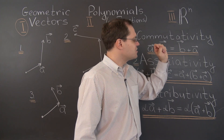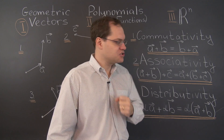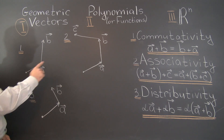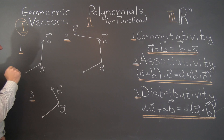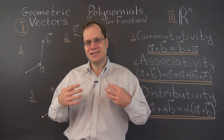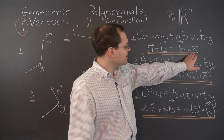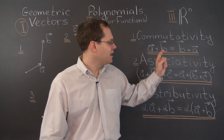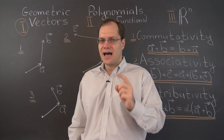In words, this is saying that the sum of two vectors does not depend on the order of the terms. Geometrically, A plus B means you take a journey according to vector A first, and then from the point you ended up at, take another journey according to vector B. The right-hand side says go according to B first, then according to A. Equality means you end up at the same point.